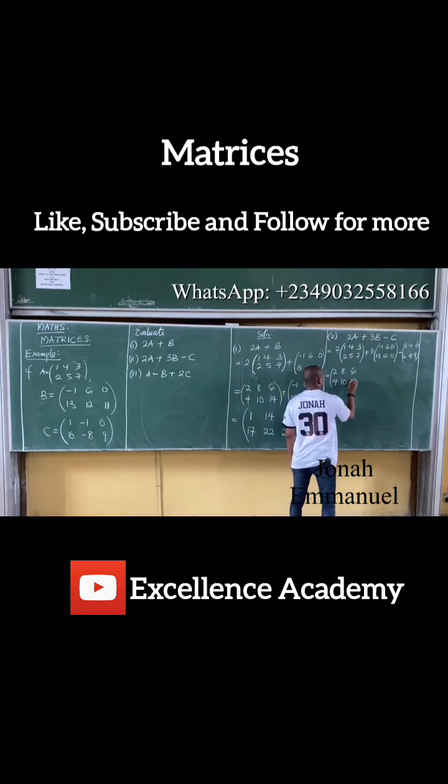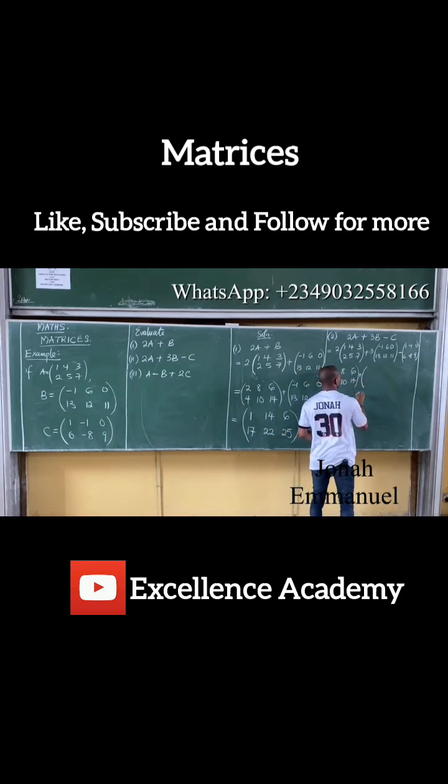Then 2 and 7 is 14. Plus, you expand those like this: 3 times minus 1 is minus 3, 3 times 6 is 18, then 14, 12, 12.